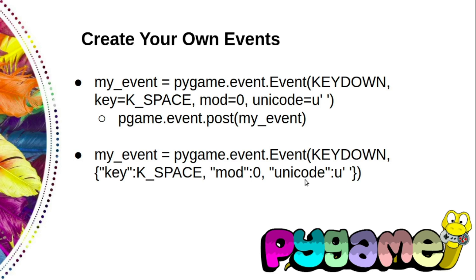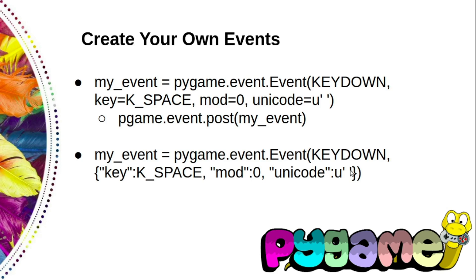In addition to simulating pygame-generated events, you can create a completely new event. All you have to do is use a value for the event that is above USEREVENT. USEREVENT is the maximum value that pygame will use for its own event IDs. This can sometimes be useful if you want to do something in the event loop before you go on to draw to the screen. For example, cat_on_keyboard is set to USEREVENT plus 1, because we need a value greater than USEREVENT.